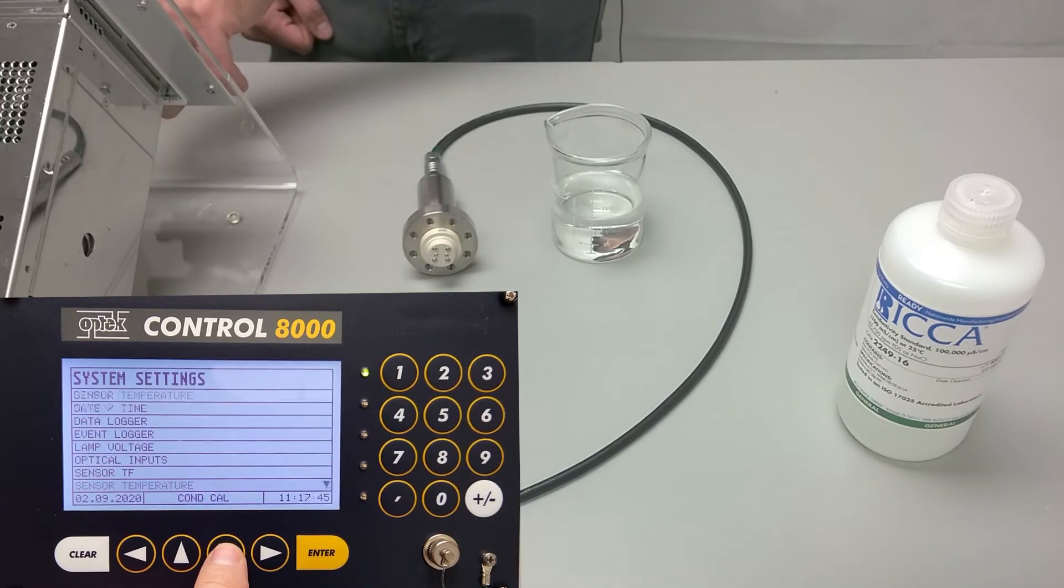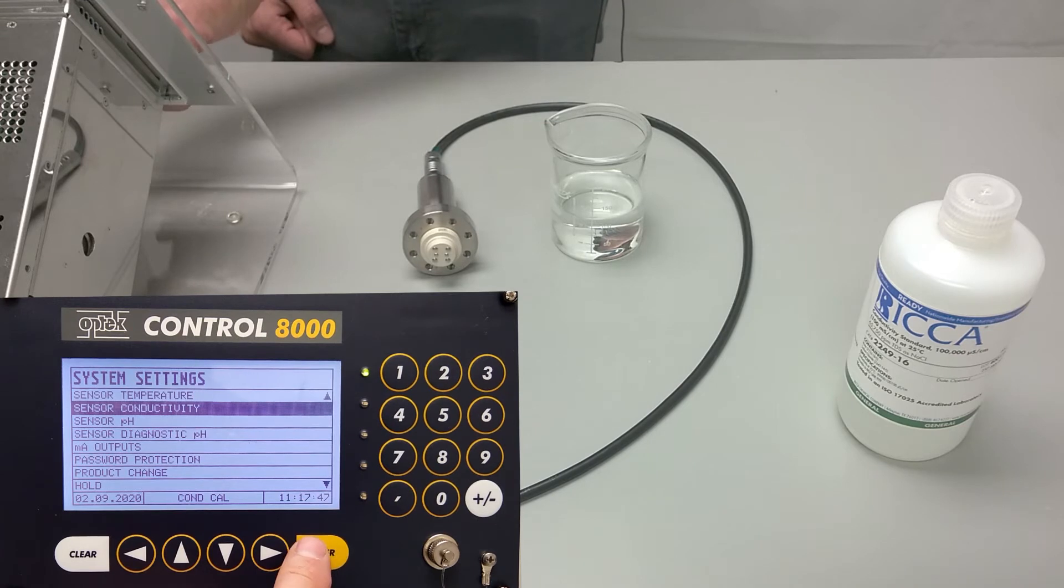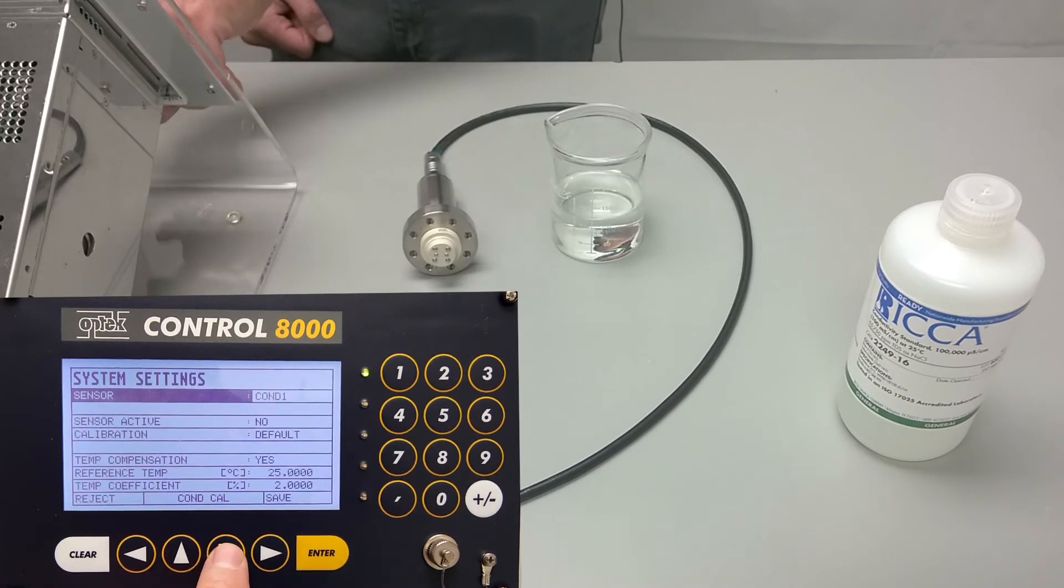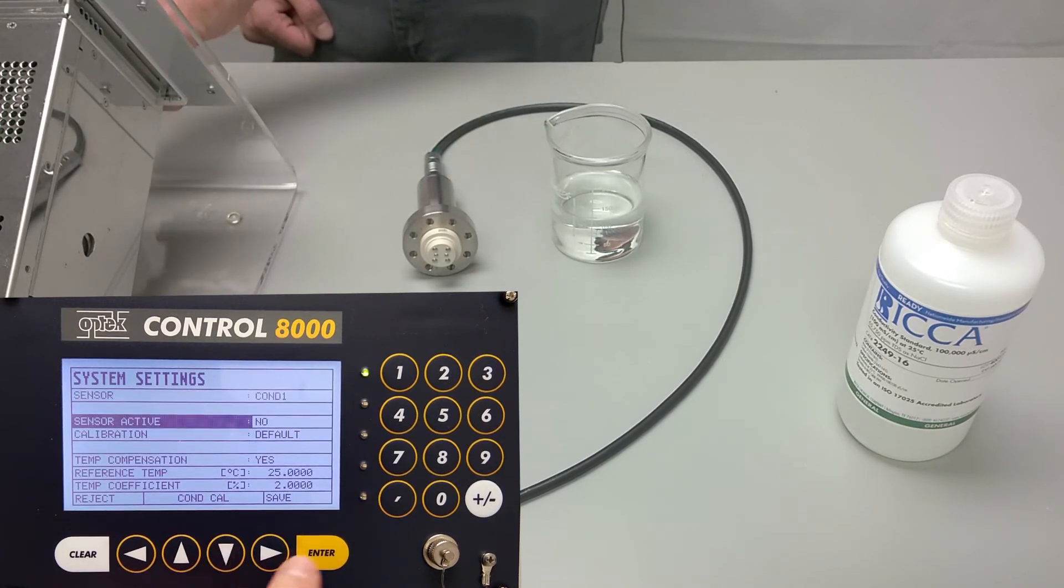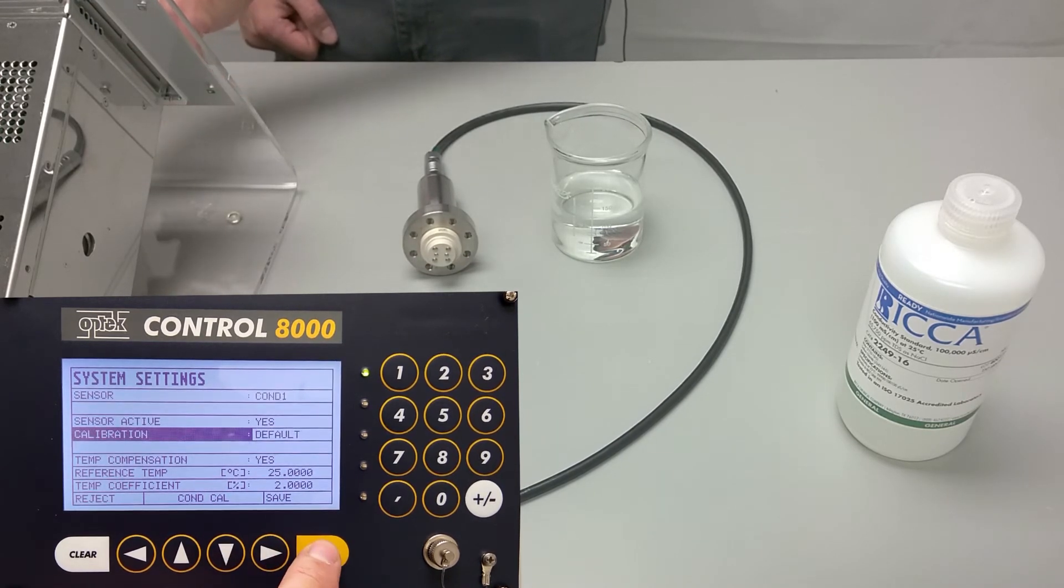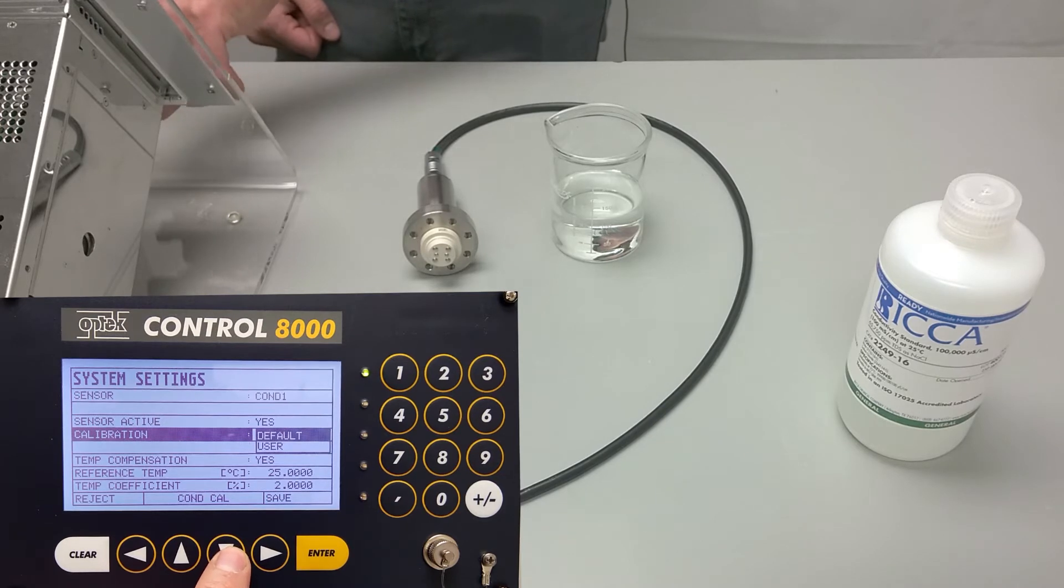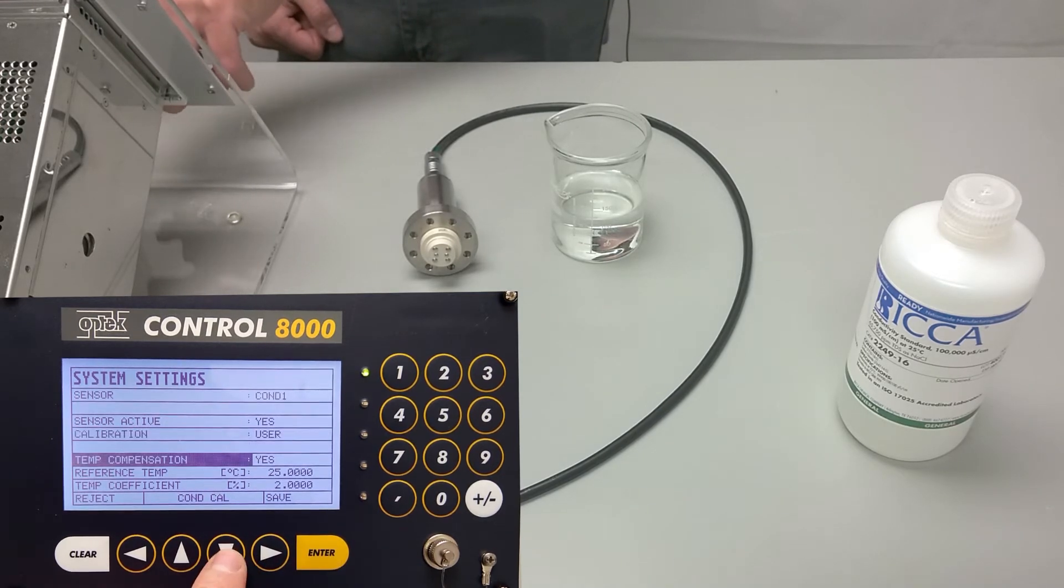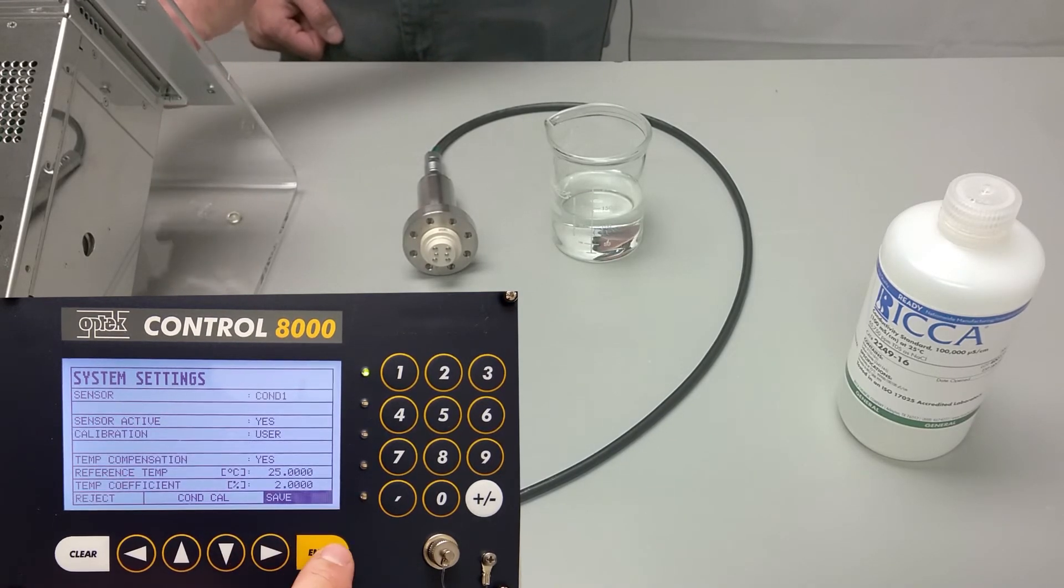Press down to get to the next menu for sensor conductivity, press enter. Again, COND1 is selected and change sensor active from no to yes. We'll also change the calibration from the default factory calibration to the user calibration we are about to perform, and then we'll save our changes.